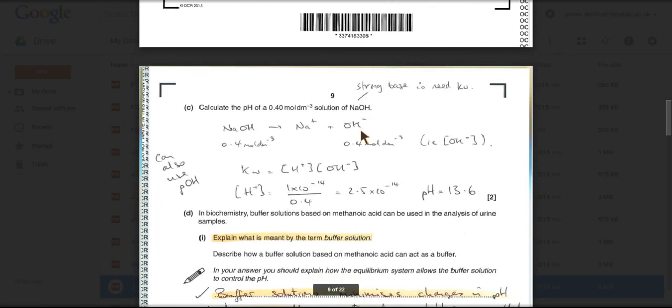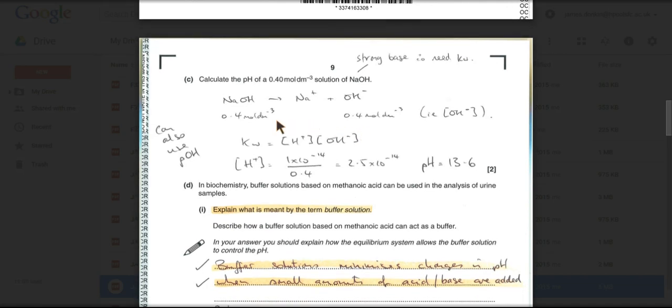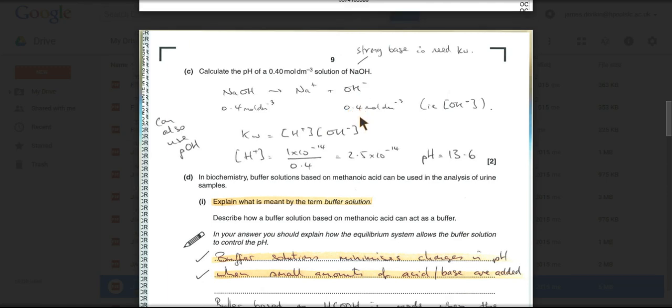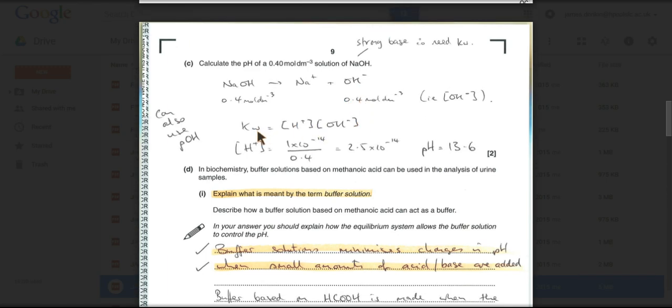pH of a strong base now. So the sodium hydroxide will fully dissociate into its ions. That means the concentration of hydroxide, sodium hydroxide, will be the same as the concentration of hydroxide ions.